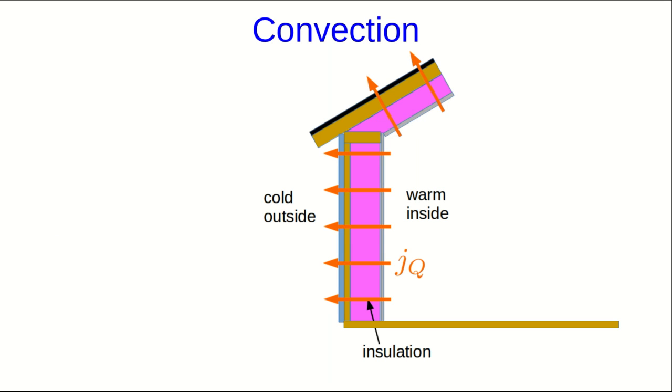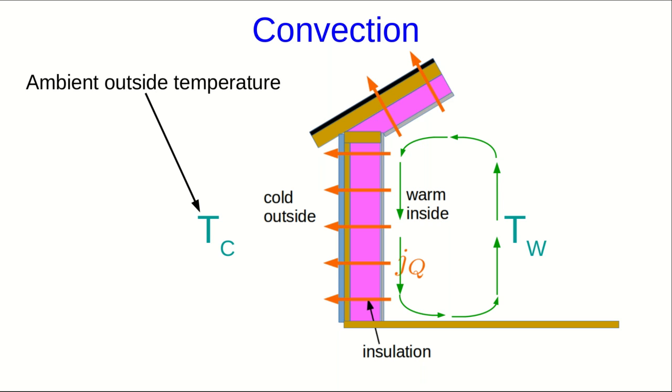I'll just finish up by briefly talking about convection, which appears all over the place. One of the things it does is take our nice simple cases and make them much more complicated. So, for example, if we think about the wall of a house, where there's conduction going on through it, there's also convection that's important. If the temperature outside is some Tc and there's some Tw in the warm inside, then what's going to happen is that the air near the wall is exchanging thermal energy with the wall and cooling down. That tends to make it sink, and you get a convection roll in the room. And so the temperature near the wall ends up being less than the temperature out in the room.